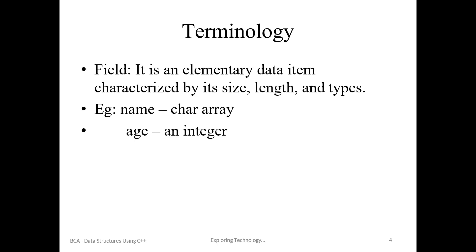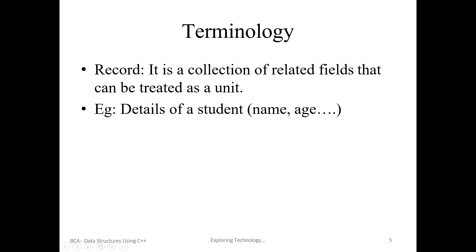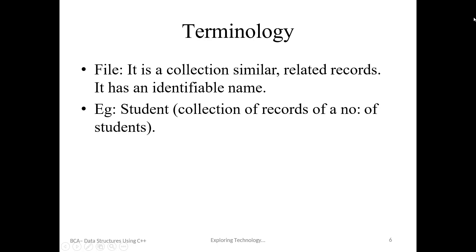Now coming to the various terminology: a field is an elementary data item. For example, student name, age, address, gender, mobile number — this is elementary information. A record is a collection of related fields that can be treated as a unit.